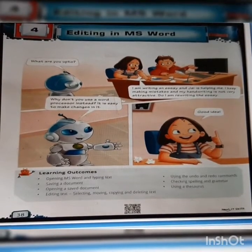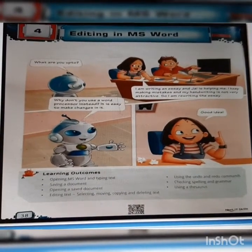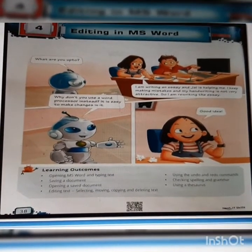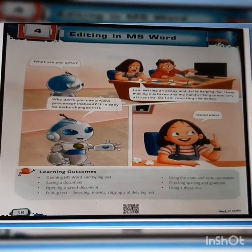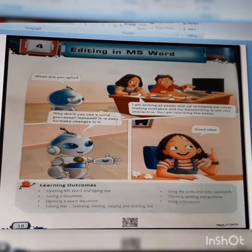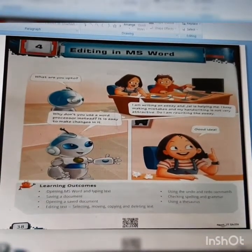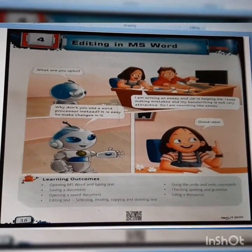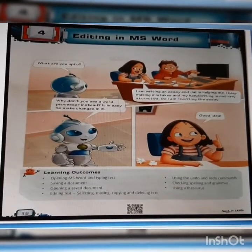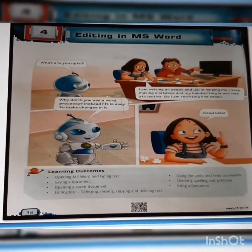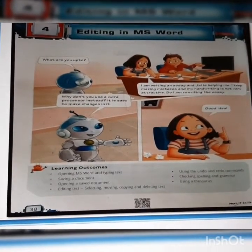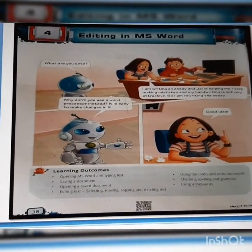What are you up to? I am writing an essay and Jay is helping me. I keep making mistakes and my handwriting is not very attractive, so I am rewriting the essay. Why don't you use a word processor instead? It is easy to make changes in it. Good idea. So in this chapter we are going to learn about MS Word and how we can do editing in MS Word. So let's start reading the chapter.